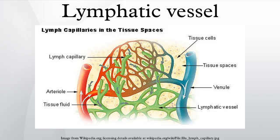In anatomy, lymphatic vessels or lymph vessels are thin-walled, valved structures that carry lymph. As part of the lymphatic system, lymph vessels are complementary to the cardiovascular system.